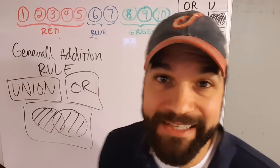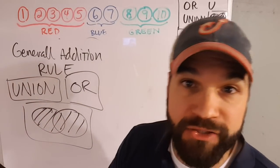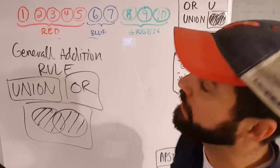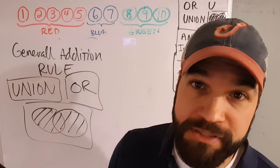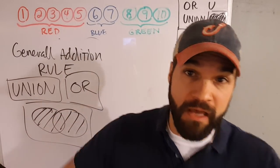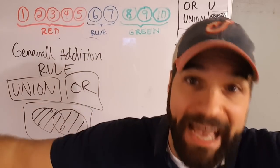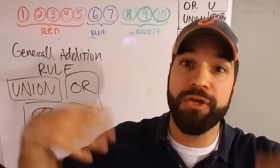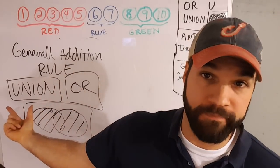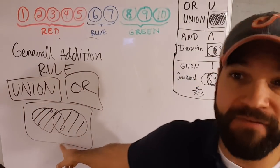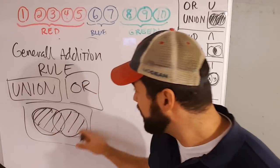What's up, guys? AP Stats Guy here, Mr. Nystrom here, talking a little bit more about some probability. We're going to talk about the general addition rule, which has to do with 'or' — this or that. Or is the add thing. Or is also known as the union. It's sometimes shown in a Venn diagram as all the stuff inside here.